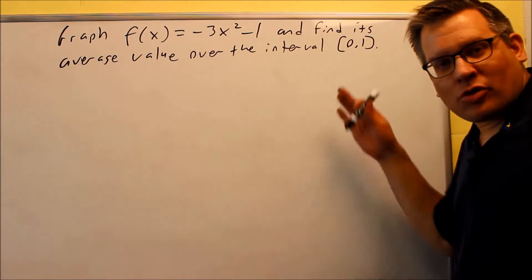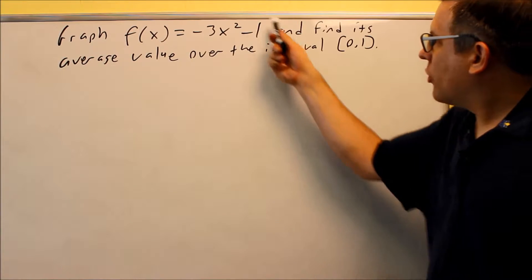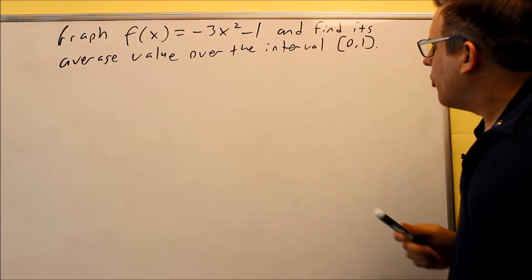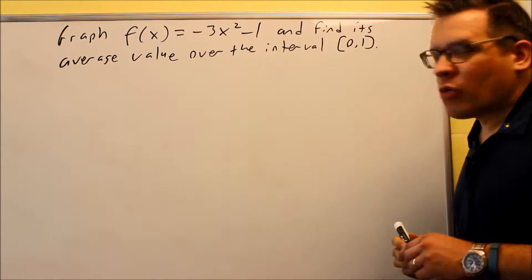Okay, so here's an example we'll take a look at. We want to work with the average value function. Here's our original f of x. Our interval is from 0 to 1. First thing it asks us to do is graph.